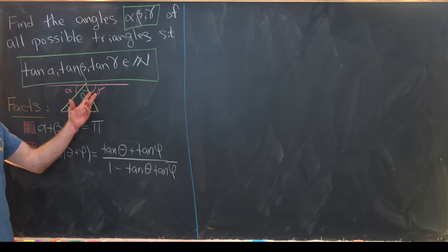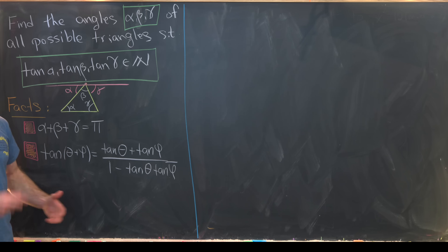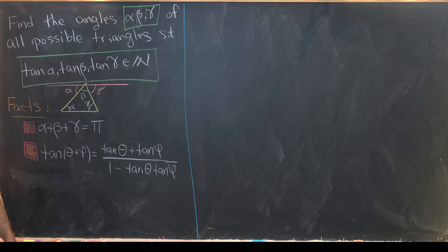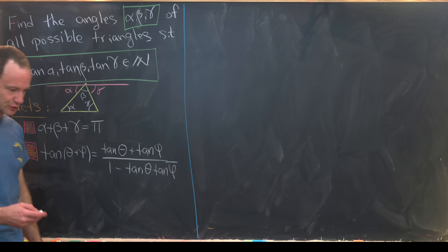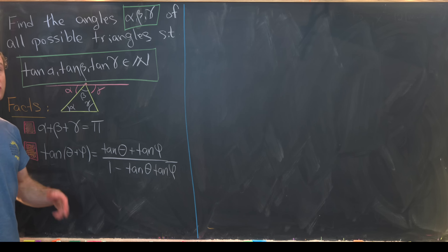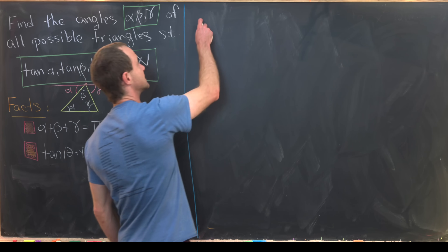Alpha plus beta plus gamma makes a straight line, which means alpha plus beta plus gamma equals 180 degrees, or π radians. We used some angle chasing facts here, but we can only go so far into the background. Now let's look at the tangent sum identity, which we will prove using complex numbers.